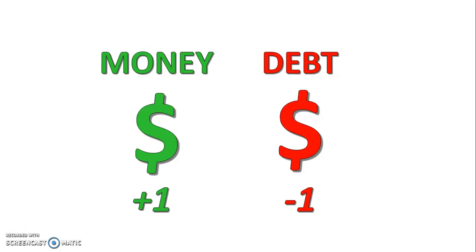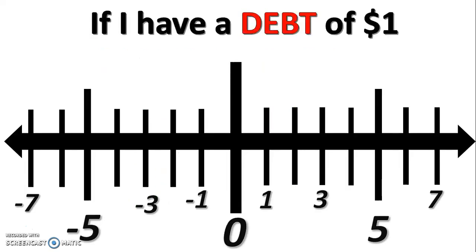For example, money and debt. If you have money, that's a positive integer. But if you owe money, it's negative. If you owe a debt, you actually don't have zero dollars — you have less than zero dollars.